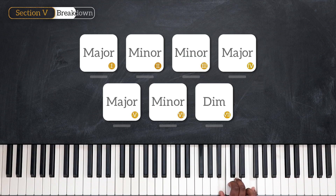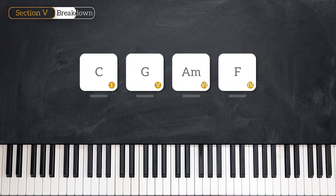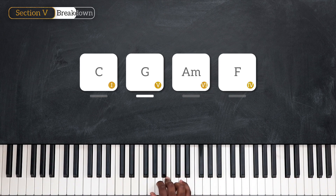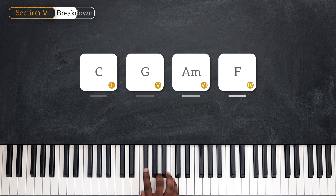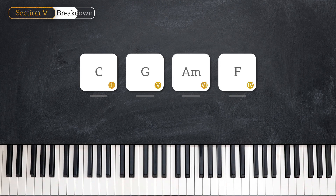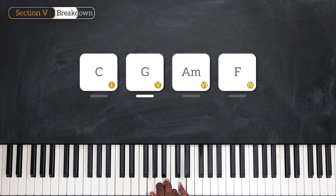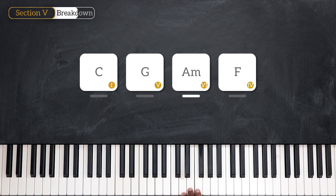Knowing that, if we were to play a song in the key of C that goes like this — C, G, A minor, and then F — I can say using the number system that I played C, the one, then G, that's the five, then A, the six, and then F, the four.